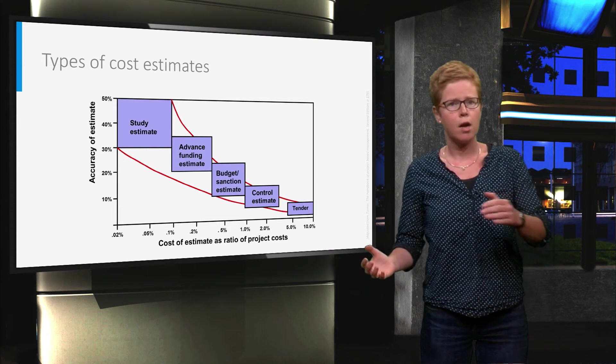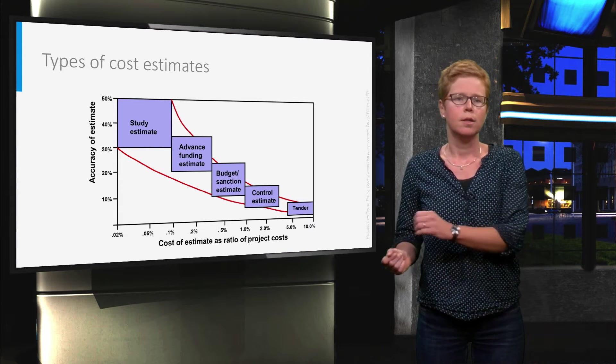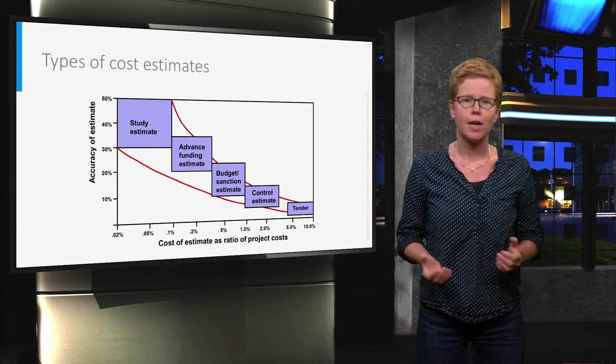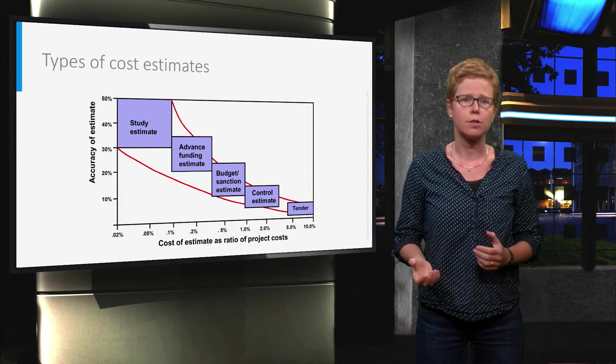This accuracy range narrows down to about 5 percent in the tender phase, when you specify your estimate at individual tasks.